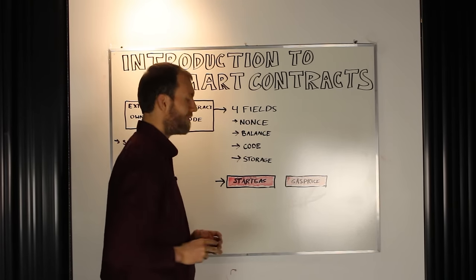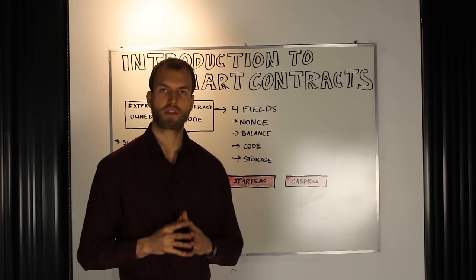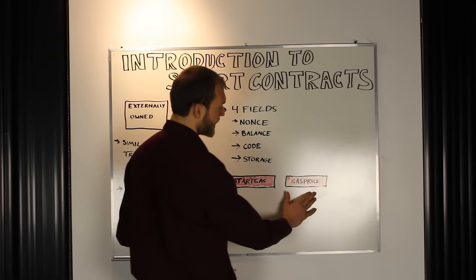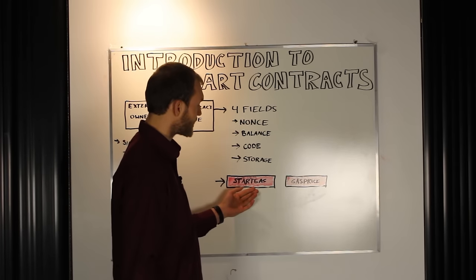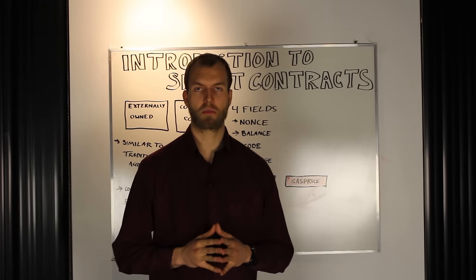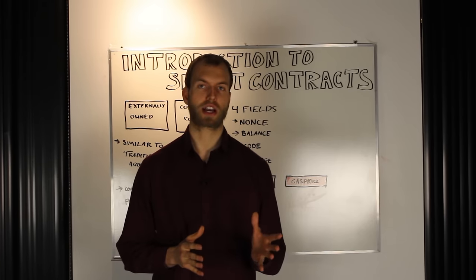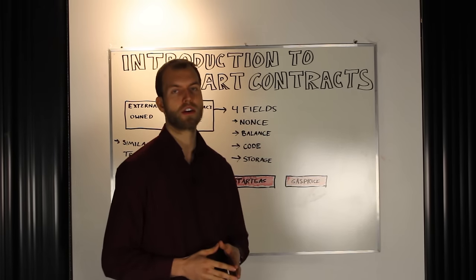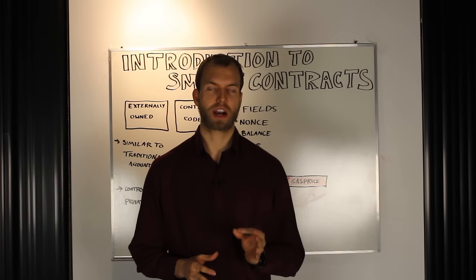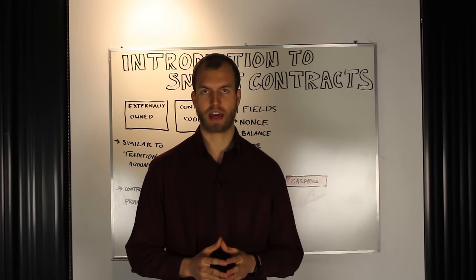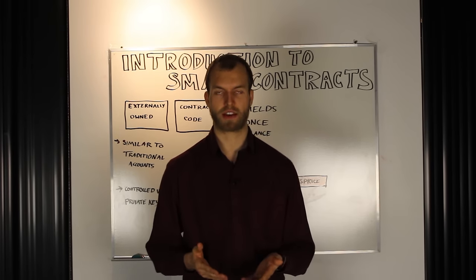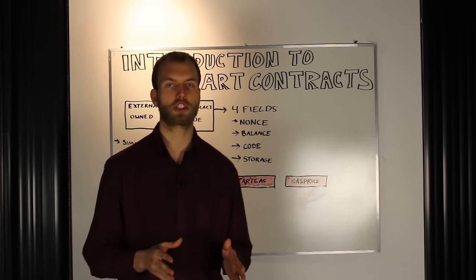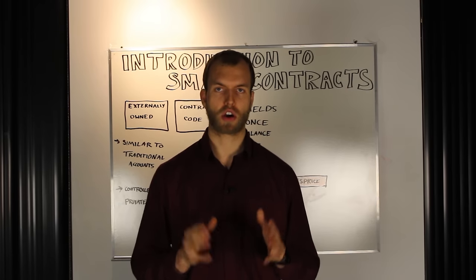Now, two very important values that you're going to be hearing more frequently when we discuss smart contracting systems are start gas and gas price. Start gas describes the maximum number of computational steps a contract is allowed to perform. Gas price, on the other hand, will designate the price per computational step that the contract is willing to spend. These two values, start gas and gas price, are essential when you're constructing your smart contract.